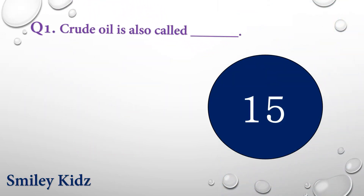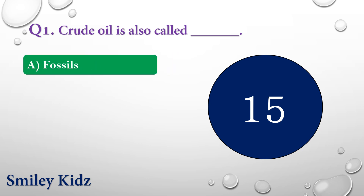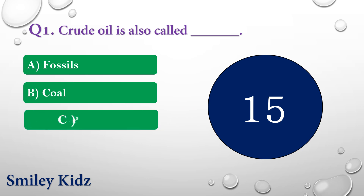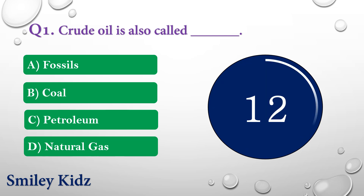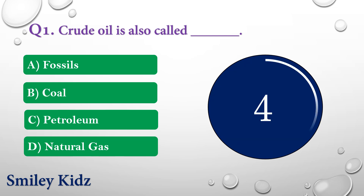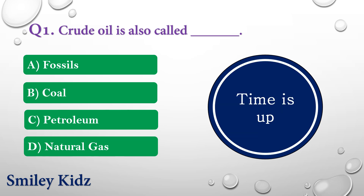Question number one: Crude oil is also called dash. The options are: A) Fossils, B) Coal, C) Petroleum, or D) Natural gas. Your time is up and the right answer is option C — Petroleum. Crude oil is also called petroleum.